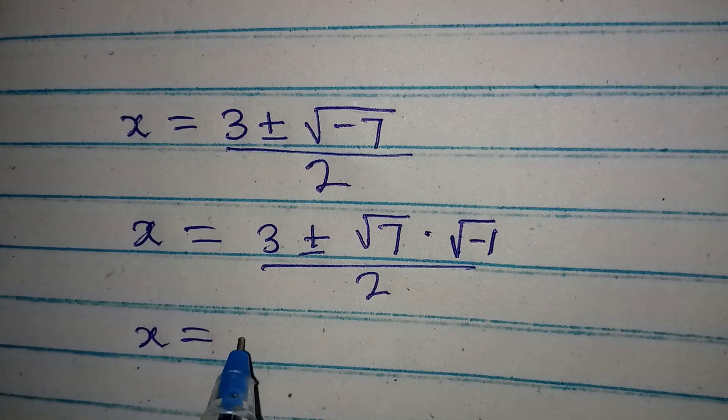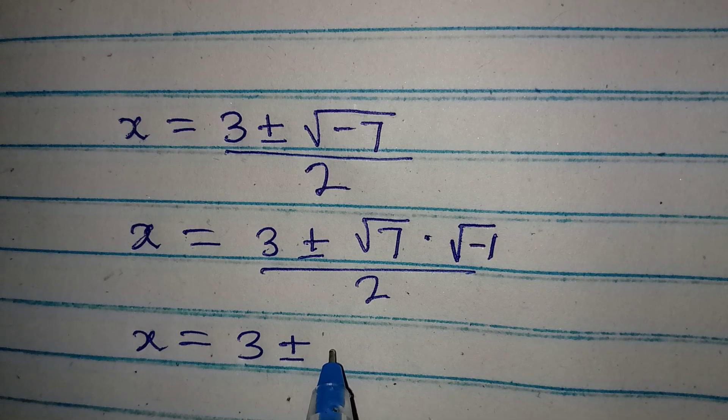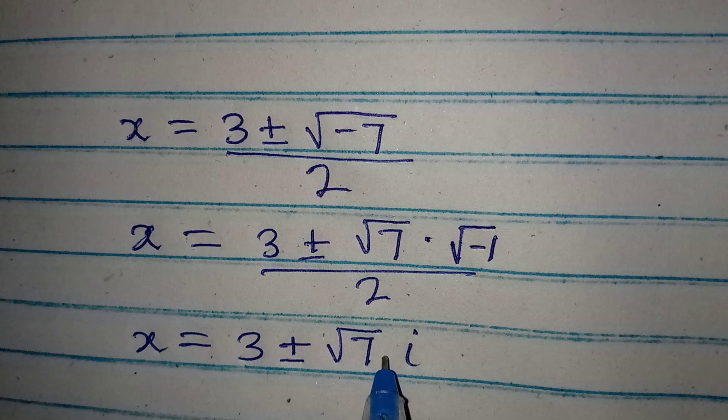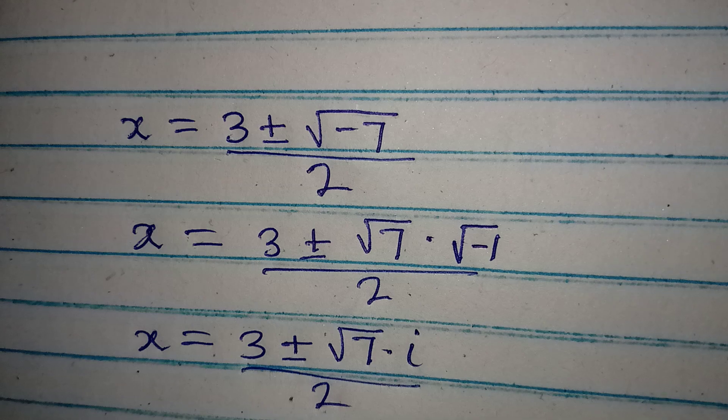Now, x here is equal to 3 plus or minus square root of 7 multiplied by i, because square root of negative 1 is i, and this is all over 2.